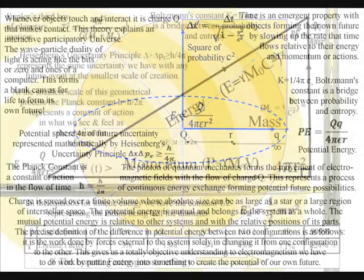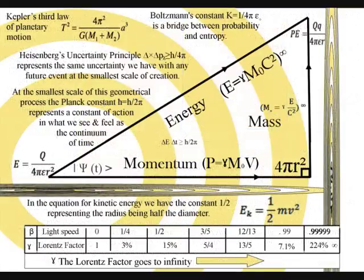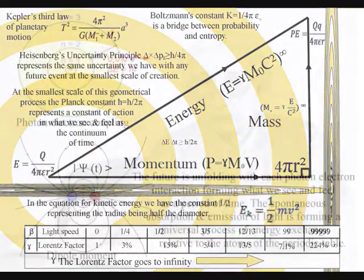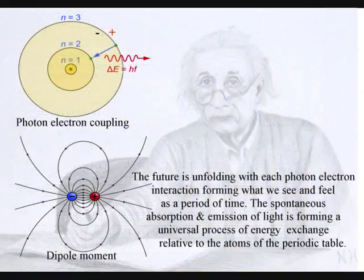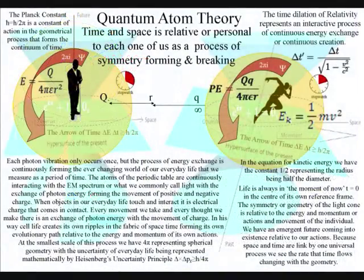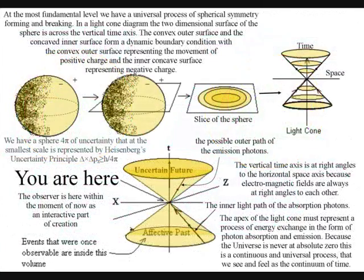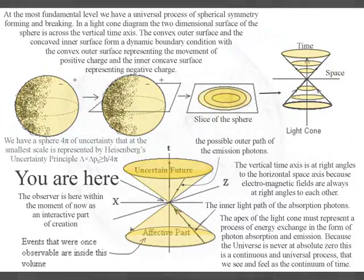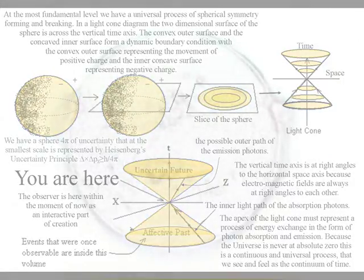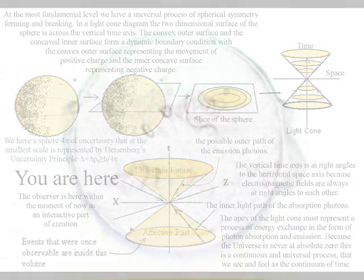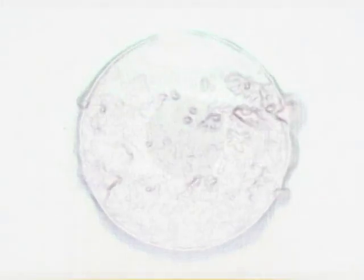This is a universal process, with charge being an innate part of all matter. Whatever we do in everyday life, there is always the movement of charge as a process of energy exchange. At high temperatures in the form of plasma, charge can cover a whole star or even a large area of interstellar space.